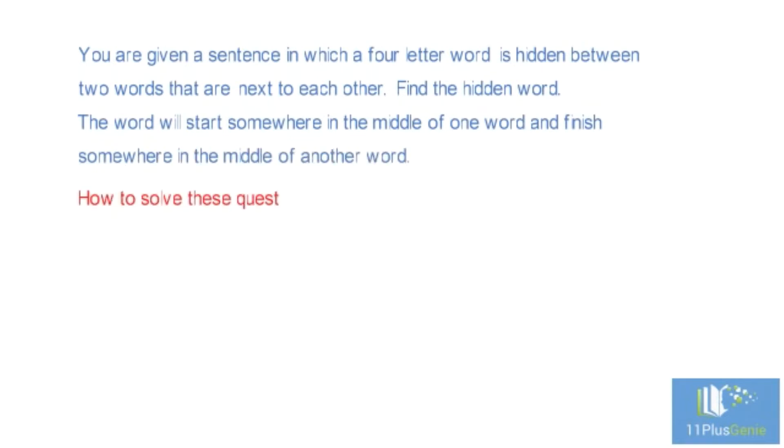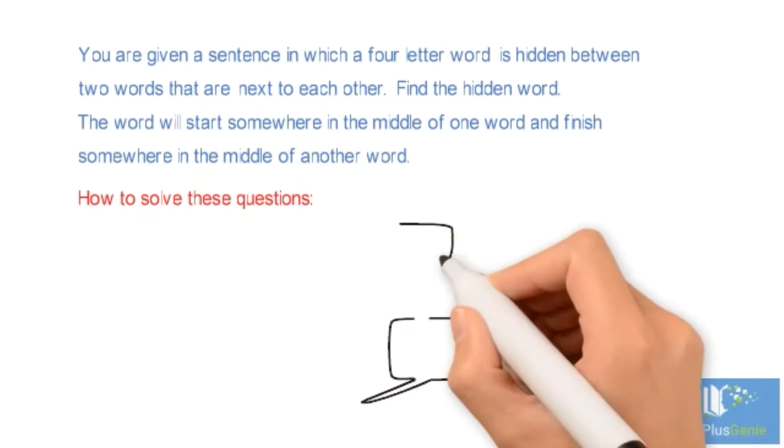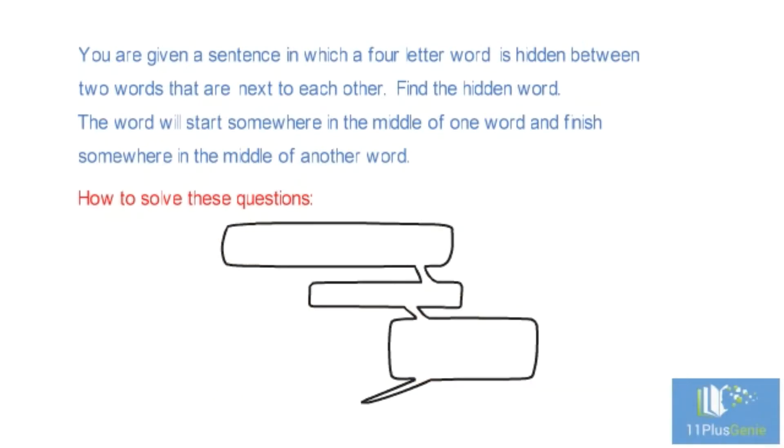How to solve these questions? As the hidden word is always a four-letter word, a good strategy is to look at the whole sentence and see if you can spot the answer right away. If not, go through each pair of words systematically. Look at the last three letters of each word and the first letter of the next word, then move along one letter at a time. Do this with each pair of words until you find the answer.